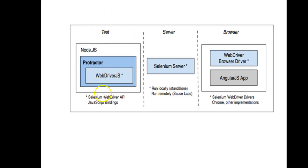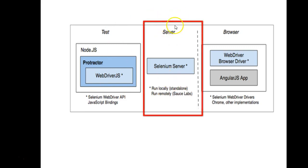The test layer consists of Protractor, which means we write our test cases in JavaScript using the Protractor API. The second layer in the Protractor architecture is the server layer, and that server is the Selenium server — because again, Protractor is a wrapper on top of Selenium.